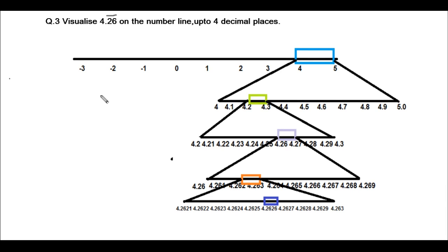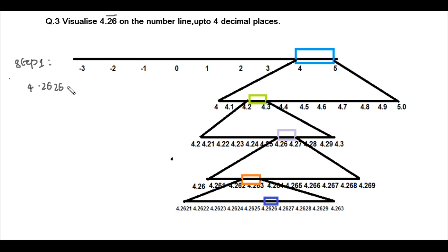Let's look at the third question: visualize 4.26 recurring on the number line up to four decimal places. From the question we understand it is a recurring decimal. To save time I have drawn the number line. In step 1 we draw the number line. From the question we understand it lies between 4 and 5, so let's mark the portion between 4 and 5.